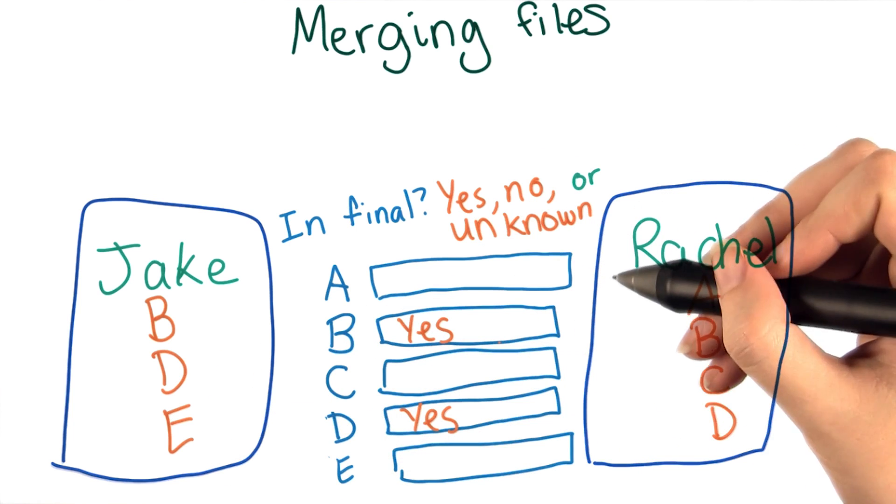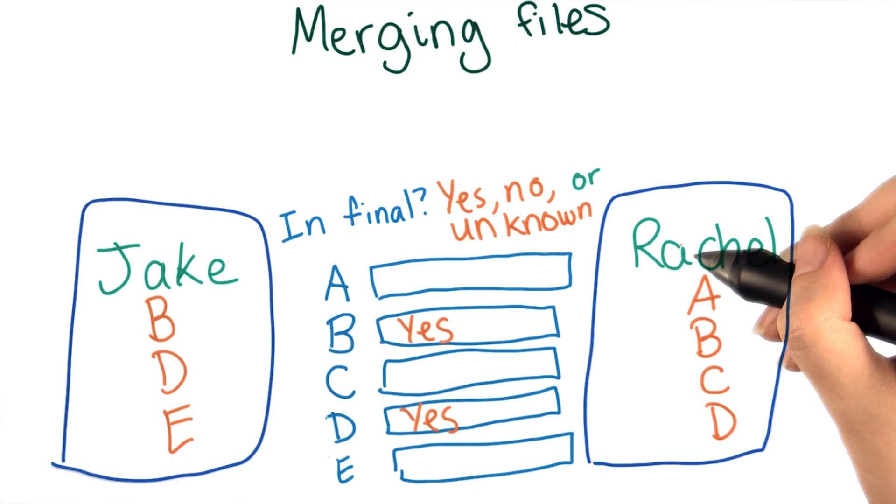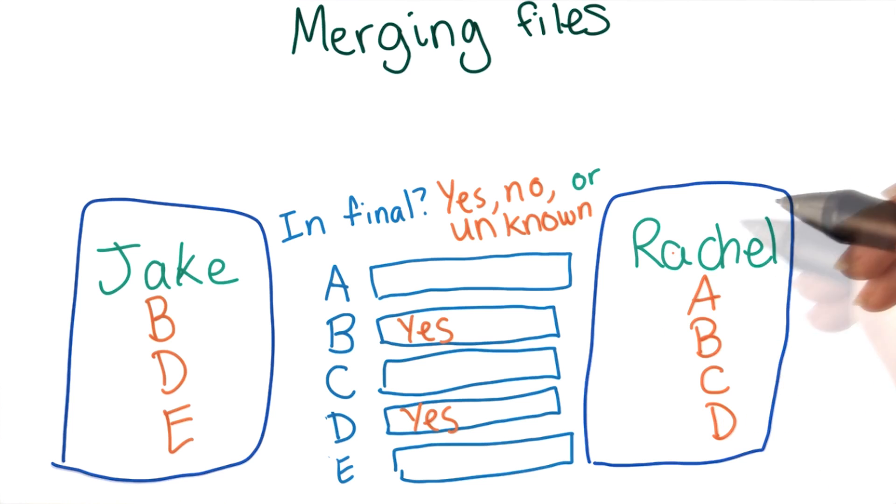It might seem like it would be safest to just include A, since you can always delete it later. But remember that these letters could be representing code, so re-adding a deleted line could cause a bug.